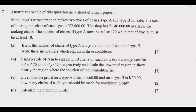Answer all of this question on a sheet of graph paper. Maplanga's carpentry shop makes two types of chairs, type A and type B, for sale. The cost of making one chair of each type is 2,000 kwacha. The shop has 140,000 kwacha available for making chairs. The number of chairs of type A must be at least 20, while that of type B must be at least 10. If X is the number of chairs of type A and Y the number of chairs of type B, write three inequalities which represent these conditions.